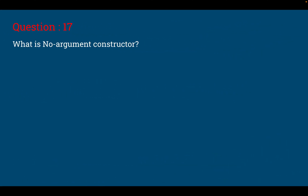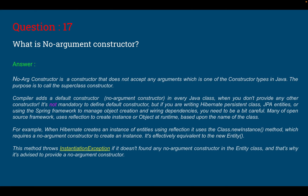Question number 17: what is a no-argument constructor? A no-argument constructor is a constructor that does not accept any arguments. Its main purpose is to call the superclass constructor. The compiler adds a default no-argument constructor in case you are not providing one in your Java class. If you are writing Hibernate persistence classes, JPA entities, or using the Spring framework to manage object creation and dependency injection, you need to be careful, as many open-source frameworks use reflection to create instances of objects at runtime based on the class name.